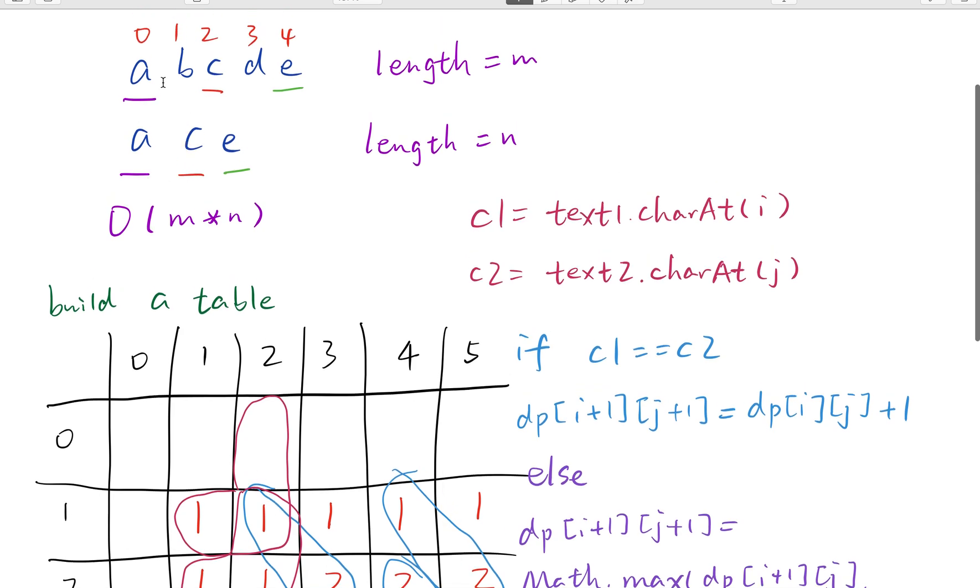If we are at index 2, this column, and we compare ace. Actually ac is enough. The longest common sequence between abc and ac is 2, right? The current two characters are both c. So it's the same.